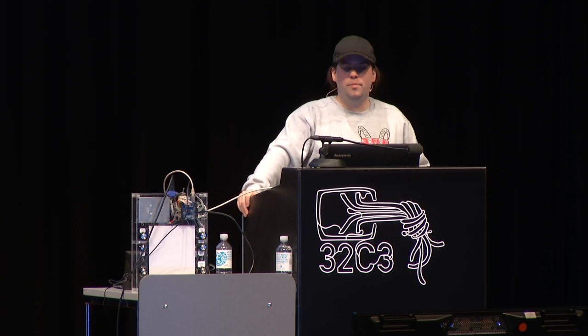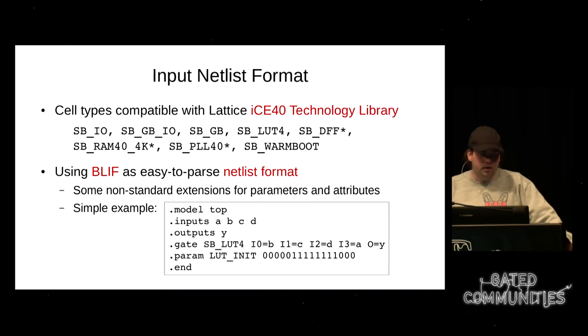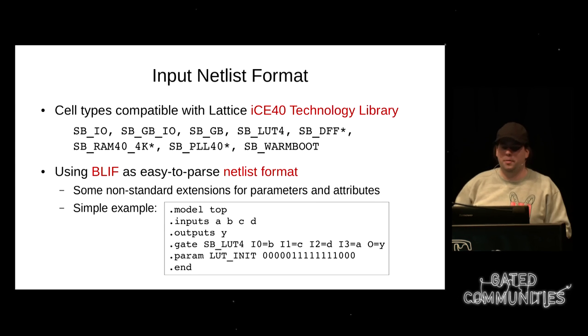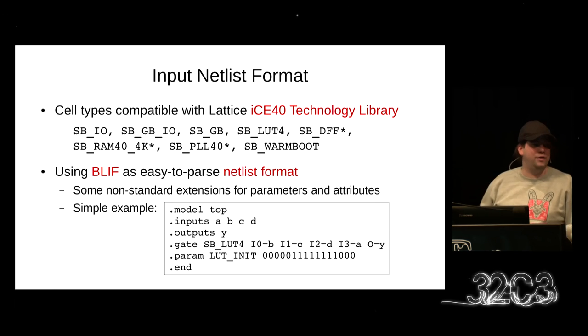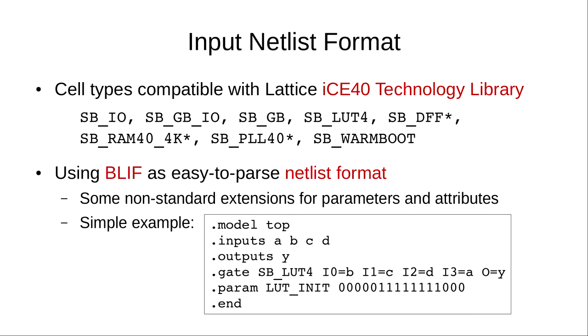How does the BLIF input netlist format look? We use the same cell types used by the Lattice tools themselves, sticking to the IceForge technology library, which allows us to mix our toolchain with the Lattice toolchain. BLIF is a pretty easy file format. A 'model' in BLIF is what Verilog calls a module. You have a list of inputs and outputs; every net not declared as input or output is an internal wire. In this example the entire design is a single SB_LUT4 with four inputs and one output, with our non-standard dot-param statement setting the lookup table for this LUT4 instance.